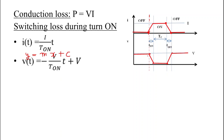Similarly, for the voltage equation during turn-on time, the slope is negative. Slope equals perpendicular upon base, where perpendicular equals V and base equals T_on, so slope is minus V by T_on. The y-intercept is V because the red dotted line is the reference axis. Therefore the voltage equation is: v(t) = (−V / T_on) × t + V.